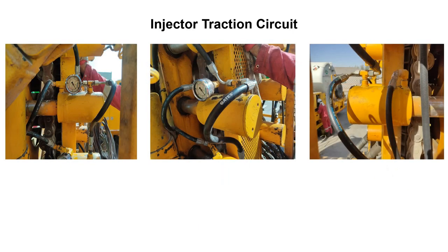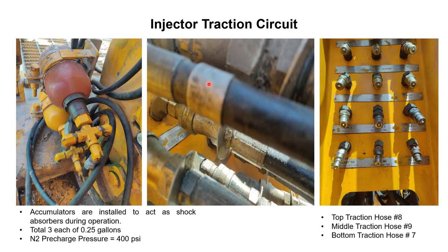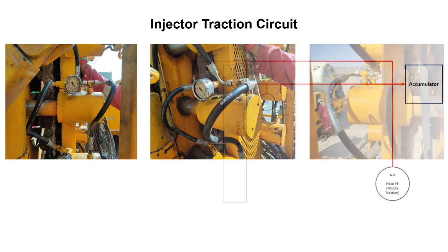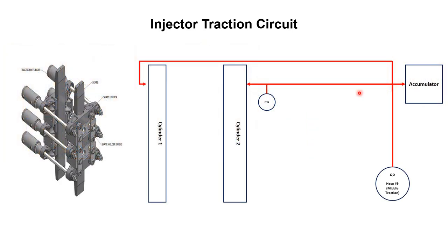Here we have this pressure gauge. From the hose panel, pressure goes to the accumulator. At the accumulator, the flow is divided into two sections — one section goes to one cylinder and the other goes to the second hydraulic cylinder. Similarly, the other two circuits serve the upper pair and the lower pair of hydraulic cylinders. In this way, we have three separate hydraulic circuits for the traction system.